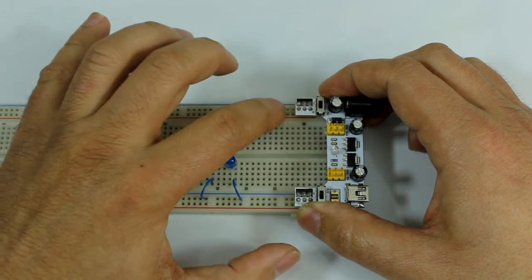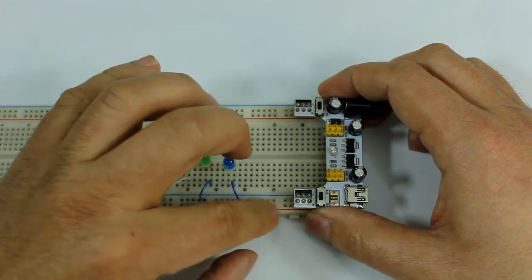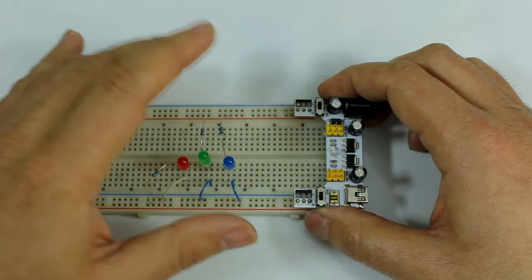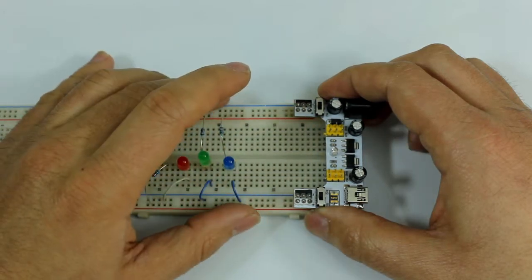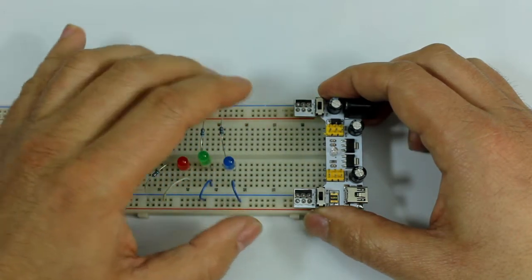We can have 3.3 volts on one side and 5 volts on the other side, or we can have the same voltage in each rail.